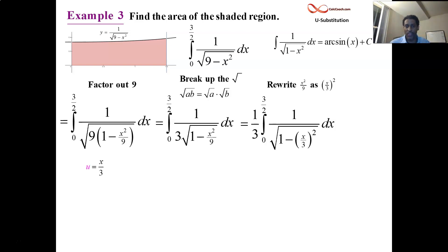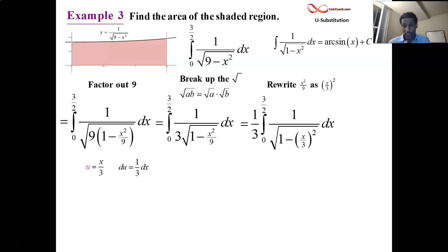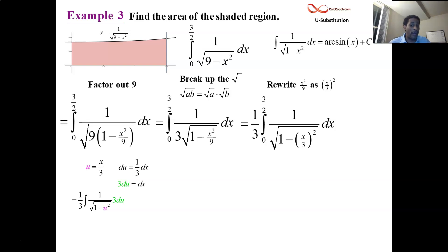Let u be replaced by x over 3. The derivative will be du equals 1 third dx — x over 3 is just 1 third of x, so don't do a quotient rule. Its derivative is 1 third times dx. We need to replace dx: 3 du is the replacement for dx. So the 1 third from the outside and this 3 cancel each other out. You're left looking exactly at 1 over the square root of 1 minus u squared, which we know — the integral of that is the arc sine of u.